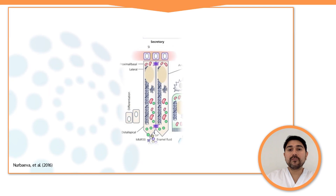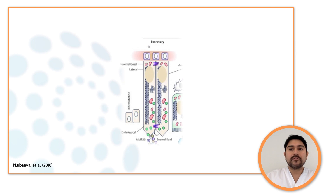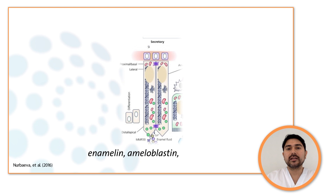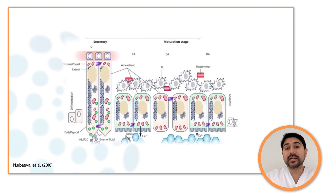Enamel formation, known as amelogenesis, is characterized by several stages. First, during the initial secretory phase, a protein-rich extracellular matrix is composed mainly by enamelin, ameloblastin, and amelogenin. It is highly secreted in an organized fashion by differentiated ameloblasts.